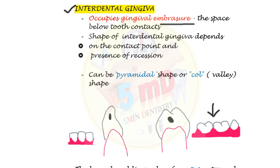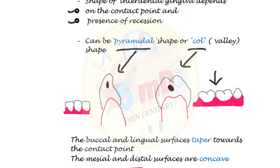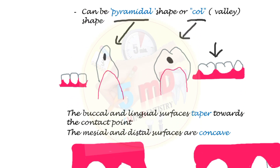The interdental gingiva can be either pyramidal shaped or col-shaped depending on two points: the shape of the interdental gingiva depends on the shape of the contact point and the presence of gingival recession or not. The buccal and lingual surfaces of the interdental gingiva taper towards the contact point.